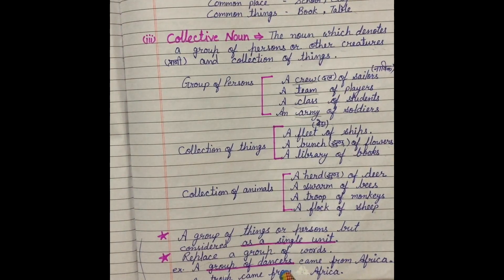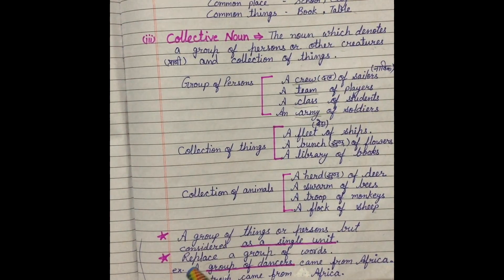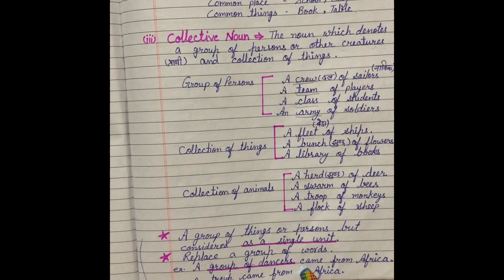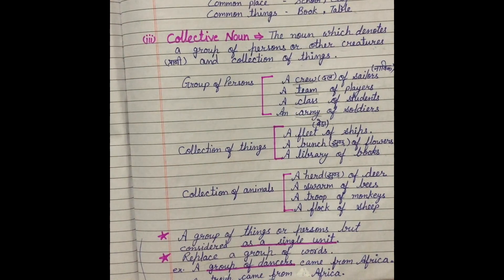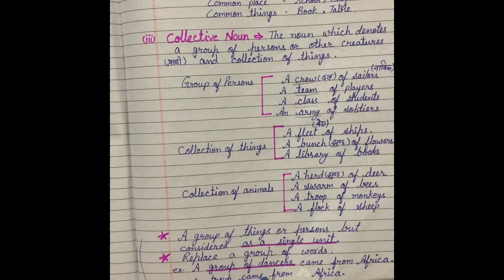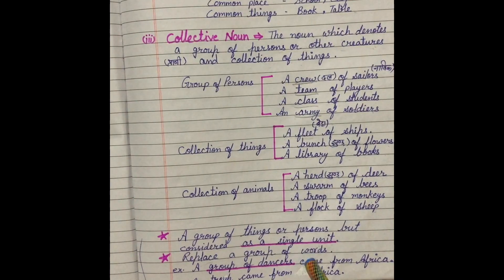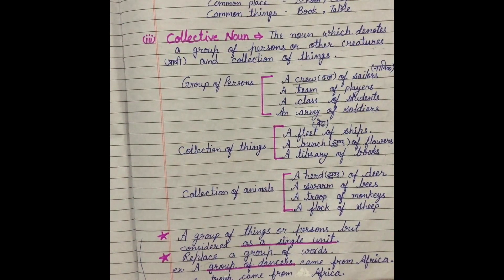For example, a group of dancers came from Africa. We can say it a troop came from Africa. Here, group of dancers replaced by troop. Group of dancers ka jo group tha, words ka jo group tha, wo se troop ke dwara replace kar diya gaya. So collective noun is used in the place of a group of words, and it is considered as a single unit.